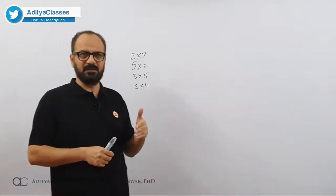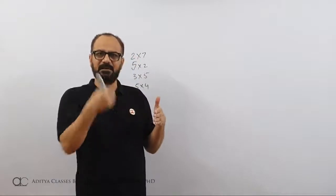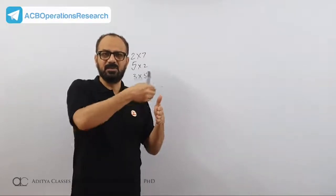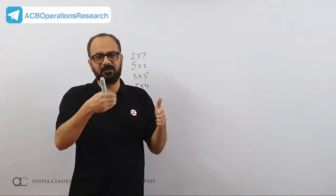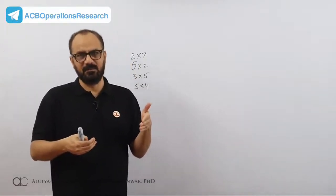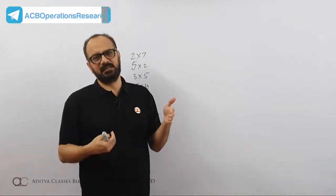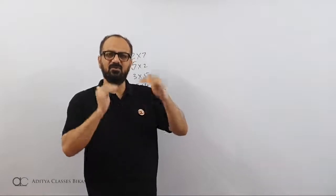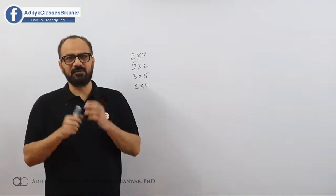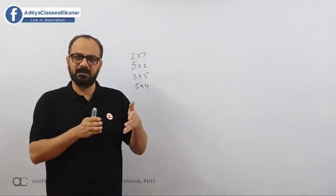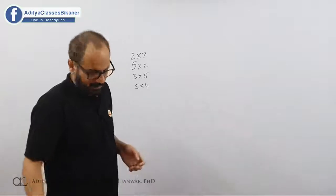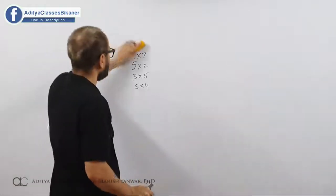When comparing columns, if every single element of one column is smaller than the respective element of another column, then we say the smaller column wins and has dominated the larger column. For columns, the smaller column dominates the larger column; for rows, the larger row dominates the smaller row. For the row player these are gains, so larger values dominate. But for the column player these are losses, so smaller values are more preferable.